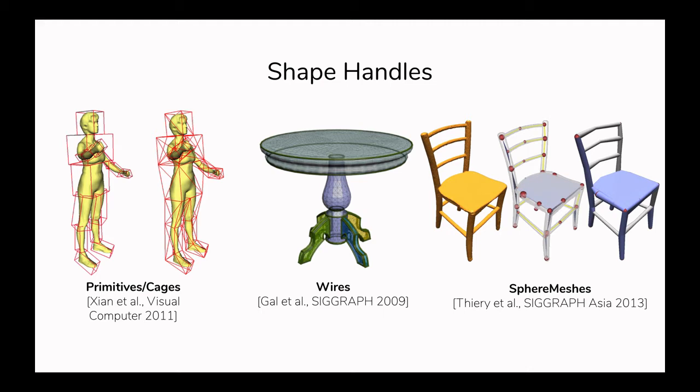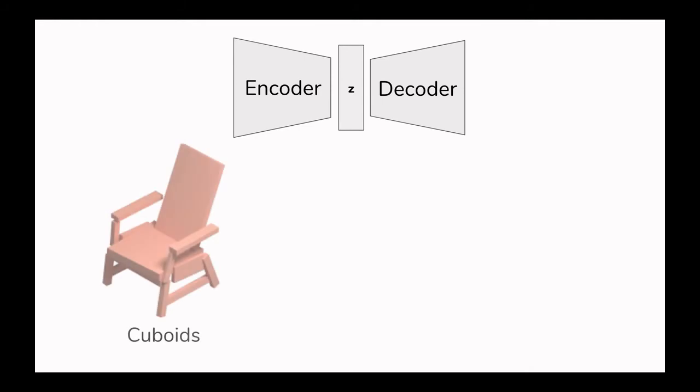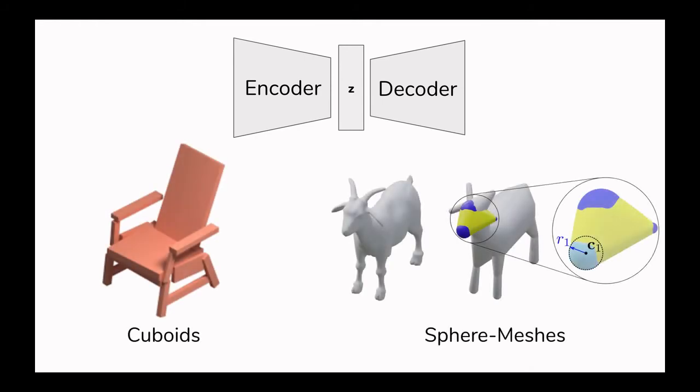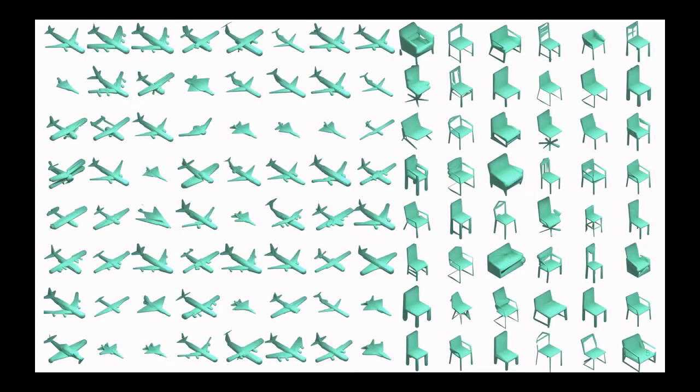We train our generative model with two different kinds of supervision: sets of cuboids extracted from human annotated parts, and sphere meshes, automatically computed handles from raw meshes without any human intervention.